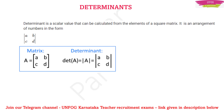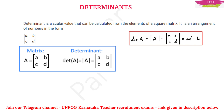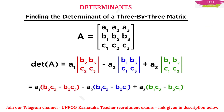A determinant is a scalar value that can be calculated from the elements of a square matrix. You convert a matrix to a determinant by replacing the bracket with straight lines. For a 2×2 matrix with elements a, b, c, d, the determinant is ad − bc.